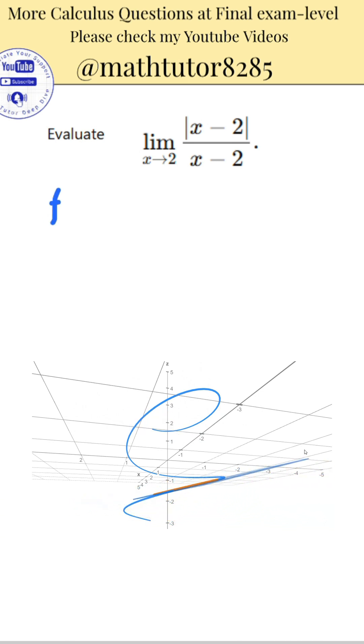First, understand the structure of the function. We are analyzing the expression: the absolute value of x minus 2 divided by x minus 2. This expression is not defined exactly at x equals 2, but we can still explore what happens as x gets closer to 2 from both sides, from the left and from the right.